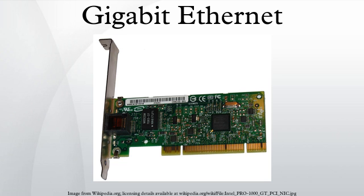1000BASE-SX is a fiber-optic Gigabit Ethernet standard for operation over multimode fiber using a 770 to 860 nanometer near-infrared light wavelength. The standard specifies a distance capability between 220 meters and 550 meters. In practice, with good quality fiber, optics, and terminations, 1000BASE-SX will usually work over significantly longer distances. This standard is highly popular for inter-building links in large office buildings, co-location facilities, and carrier-neutral internet exchanges. Optical power specifications: minimum output power equals −9.5 dBm, minimum receive sensitivity equals −17 dBm.